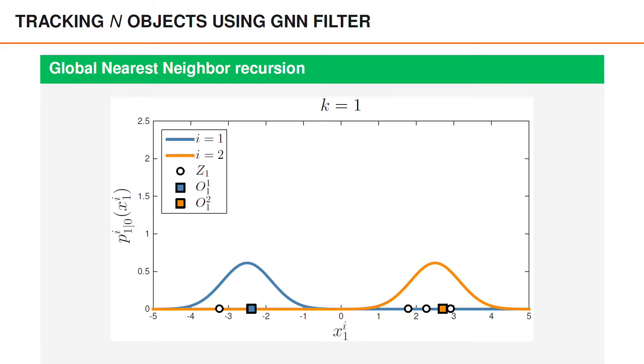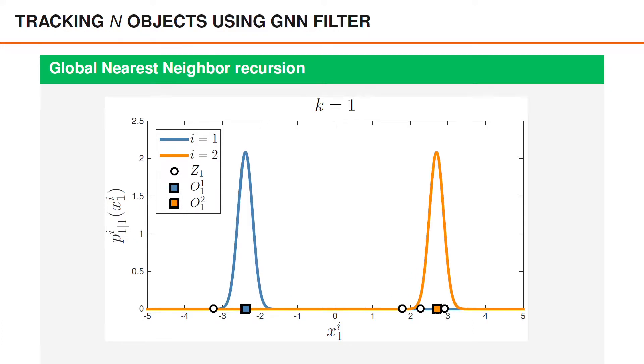On the left we have a blue detection associated to the first object whose density is blue, and similarly on the right with the orange detection. Lastly we use the optimal association to update the object densities at time 1.